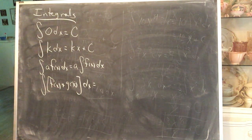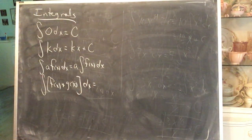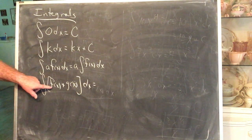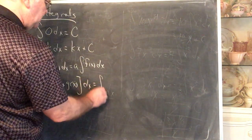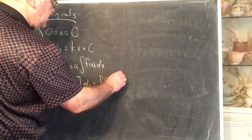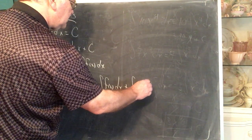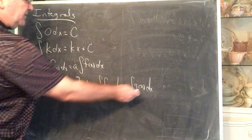The integral of the sum is the sum of the integrals. Just like the derivative of the sum is the sum of the derivatives, in a similar fashion, the antiderivative of the sum is the sum of the antiderivatives. You may break this into two pieces: the integral of f(x) dx plus the integral of g(x) dx.